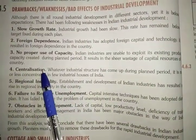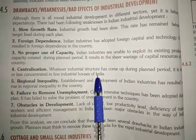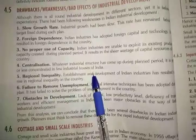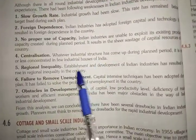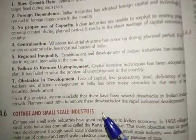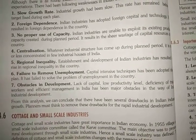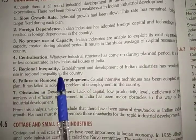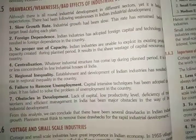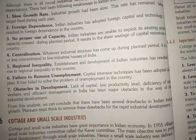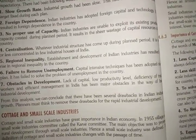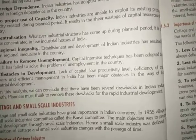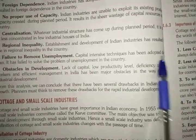Next is centralization. The process of industrialization was centralized to only a few particular industrial houses. Next is regional inequality — there were some areas like Maharashtra and Gujarat where there were a large number of industries, but there were also areas where the number of industries is very much less, which caused regional inequality in the country.